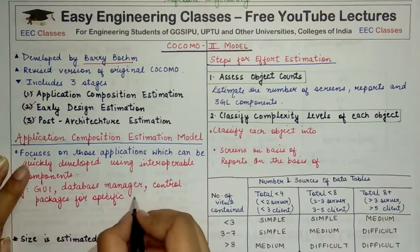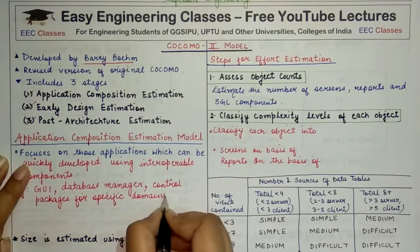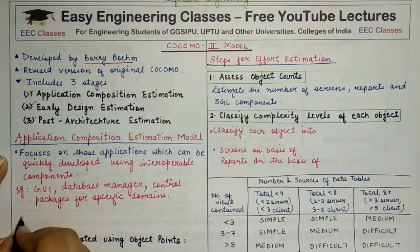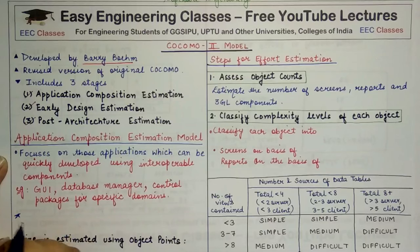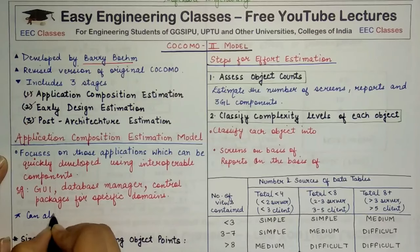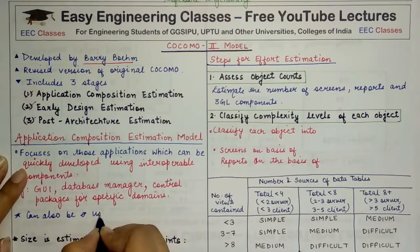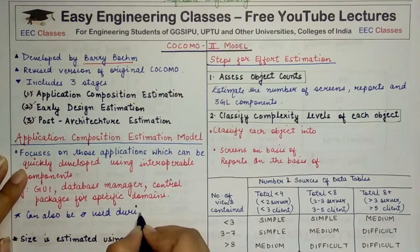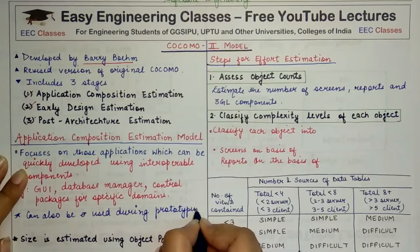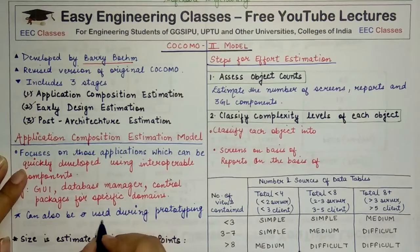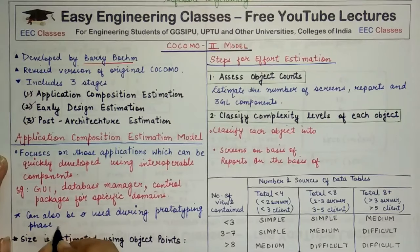In addition to those applications, the Application Composition Estimation Model can also be used during the prototyping phase of a project — for example, when we need to develop a prototype or use prototyping across different projects. This model can also be used during the prototyping phase of a project. Prototyping phase has been explained in previous lectures, so I hope you have an understanding of what the prototyping phase of an application is.